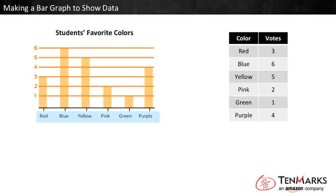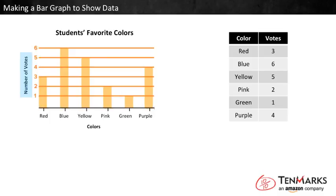Along the bottom there's a space for each category, and the categories have names. We need to add a label telling us what these categories are — in this graph they are colors. Along the side there are numbers counting up. The numbers tell how many votes it would take for a bar to reach that high. They count in order and no numbers are skipped. We need to add a label to tell what these numbers are counting — in this graph they are counting votes.